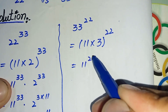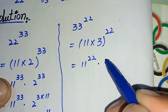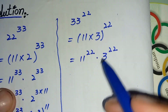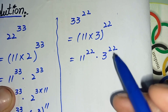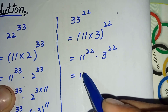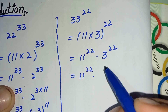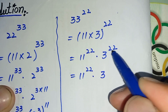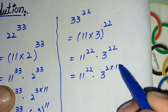Now we will spread this power on both the bases, so it will become 11 to the power 22 multiplied by 3 raised to the power 22. In the next step we will split this power as 2 times 11, so 22 equals 2 times 11.